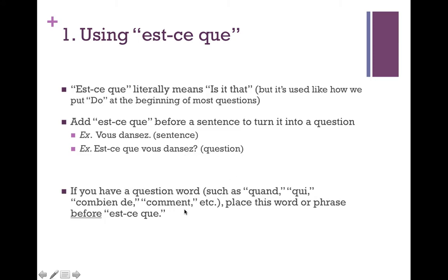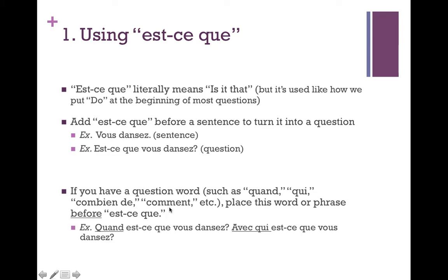If you have a question word, you put that before the est-ce que. Some of our question words are: quand, ça veut dire 'when' en anglais; qui, ça veut dire 'who' en anglais; combien de, ça veut dire 'how many' en anglais; et comment, ça veut dire 'how' en anglais. For example, you would put these before est-ce que. So you could say 'quand est-ce que vous dansez' — when do you dance — or 'avec qui est-ce que vous dansez' — with whom do you dance. That's our first way to ask questions using est-ce que.